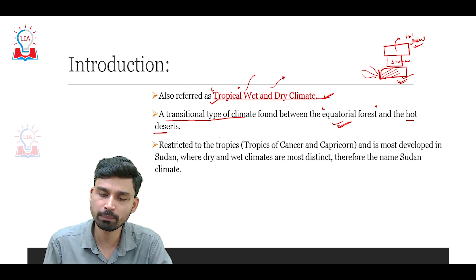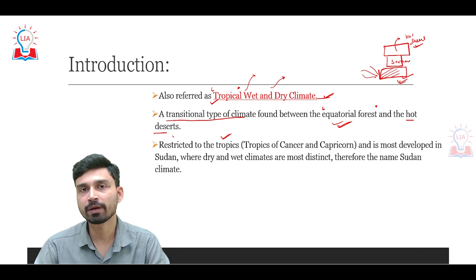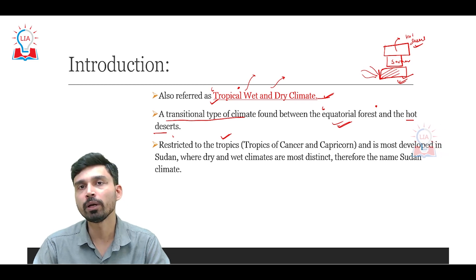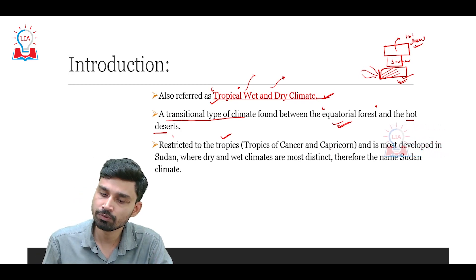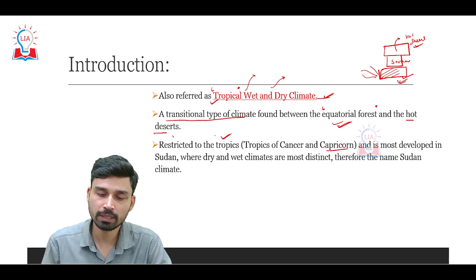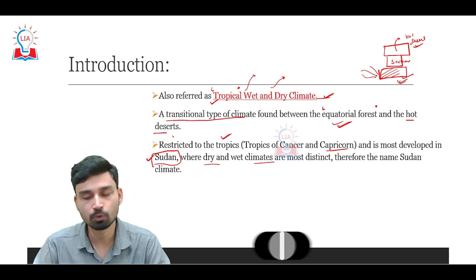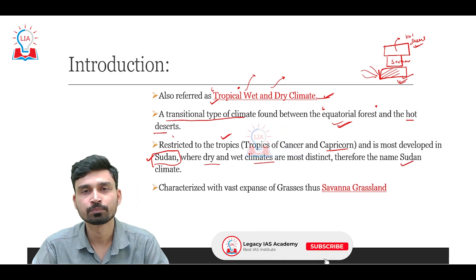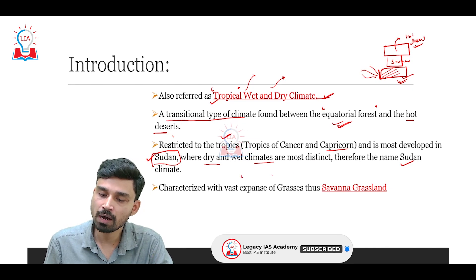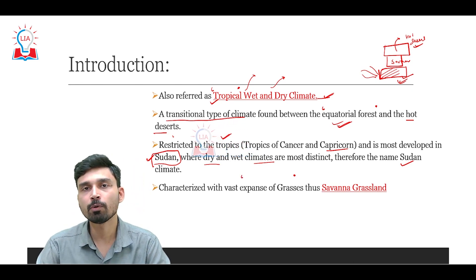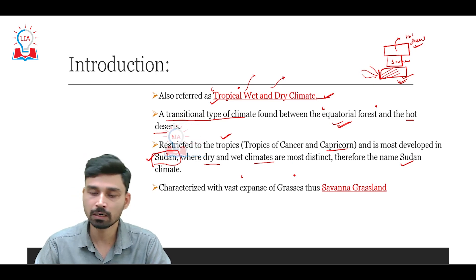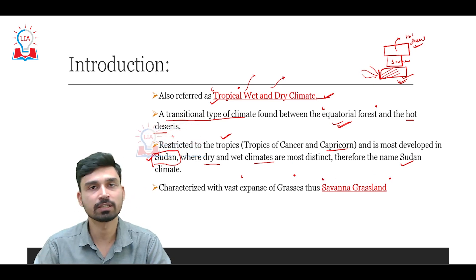This particular climate is restricted to the tropical zone, lying between the Tropic of Cancer at 23.5° north and the Tropic of Capricorn at 23.5° south. It is extensively developed in Sudan in West Africa, where dry and wet climates are most pronounced, which is why it is also called Sudan climate. It is also characterized by vast expanses of grasses — the picture that comes to mind when we say 'savannah' is a vast grassland, which is why it is also called savannah grassland.